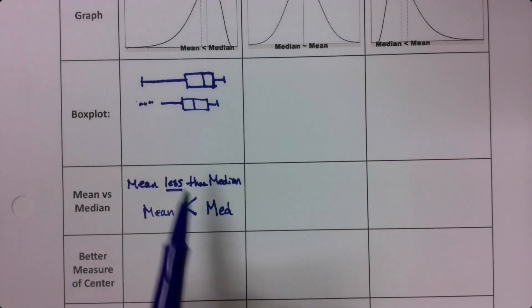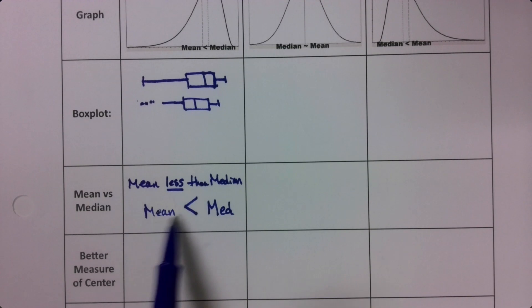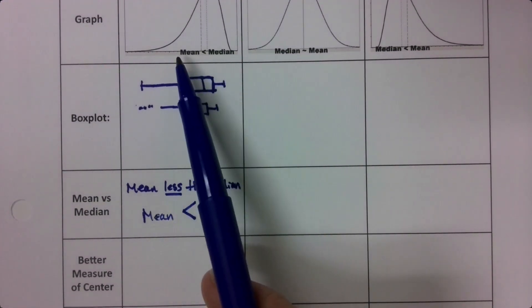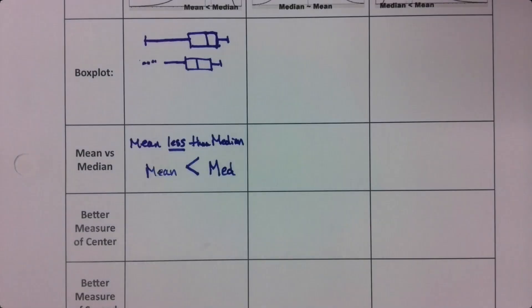The other symbol for mean is x bar. Alright. Now we learned in section 3.1, when it's skewed like this, the mean gets pulled to the tail. If the mean is getting pulled to the tail, it's not a good measure of center.